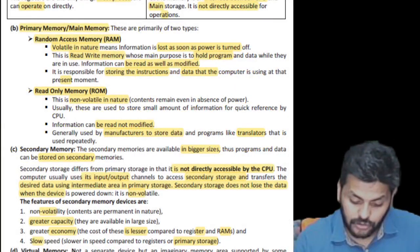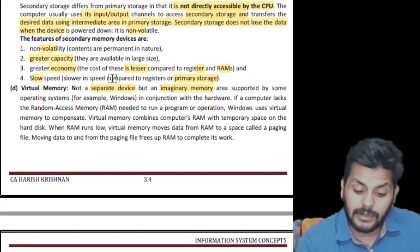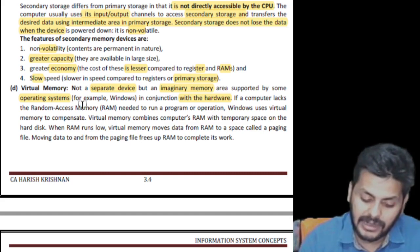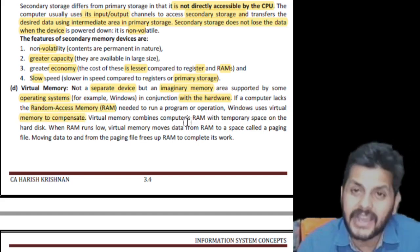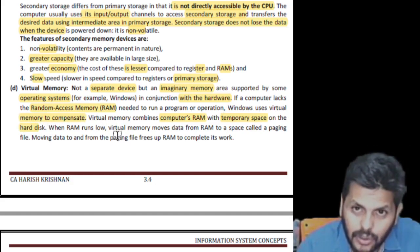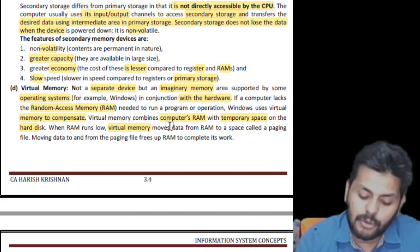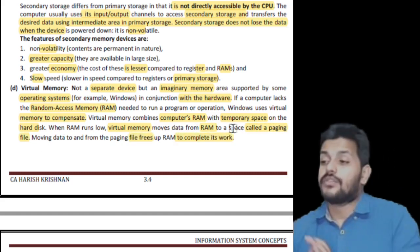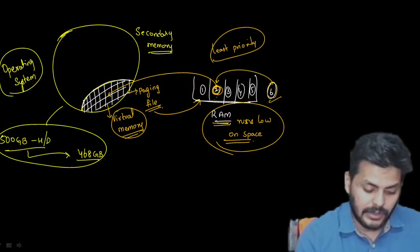Virtual memory is not a separate device — it is an imaginary memory supported by some operating systems in conjunction with hardware. Whenever the computer lacks RAM needed to run a program, Windows uses virtual memory to compensate. Virtual memory combines the computer's RAM with a temporary space on the hard disk. When RAM runs low, virtual memory moves data from RAM to a space called the paging file.